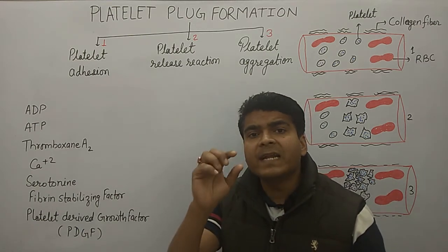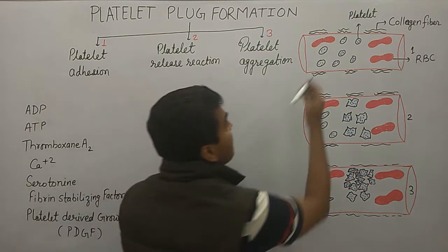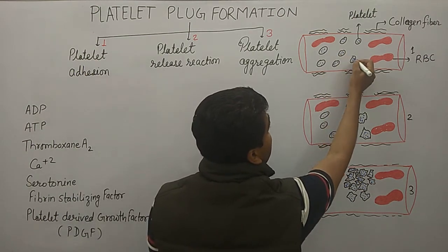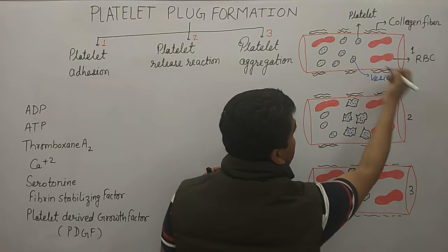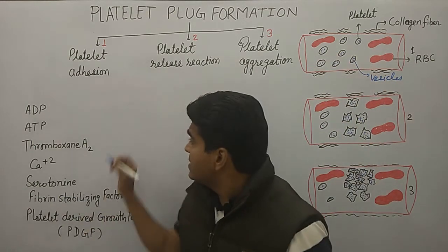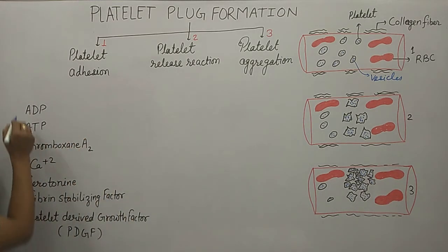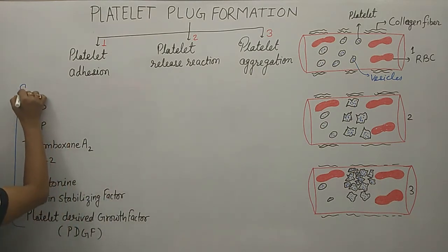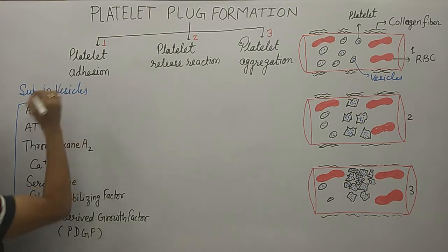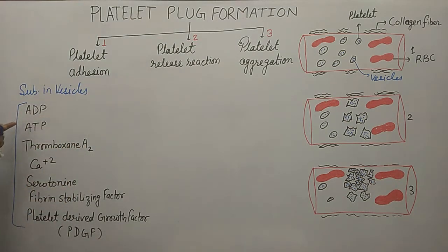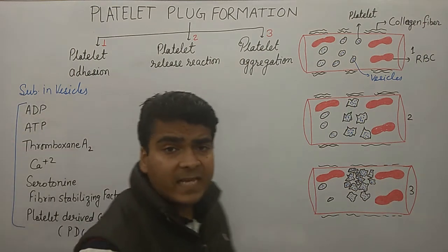Repeating again — inside the platelet, we get vesicles. What is inside these vesicles? These dots represent vesicles. Inside these vesicles the substances are: ADP, ATP, thromboxane A2, calcium, serotonin, fibrin stabilizing factor, and platelet growth factor.